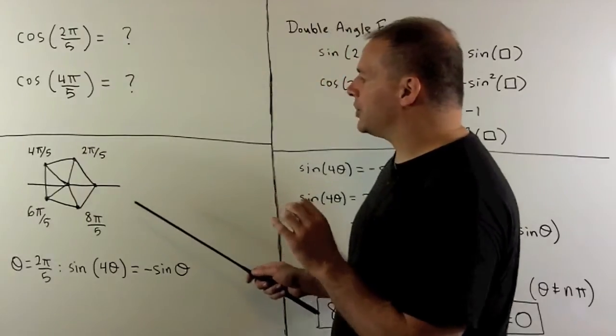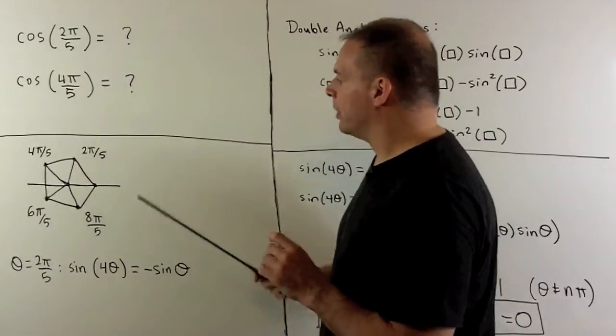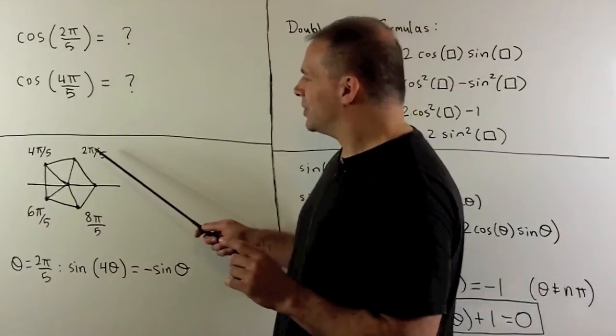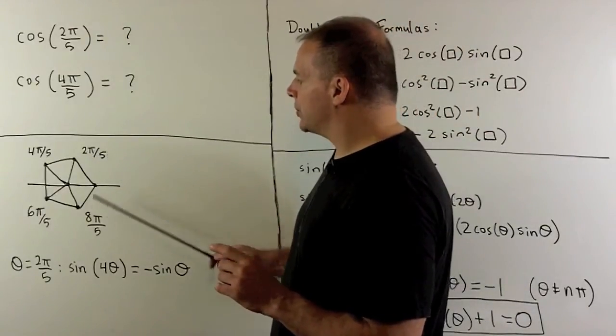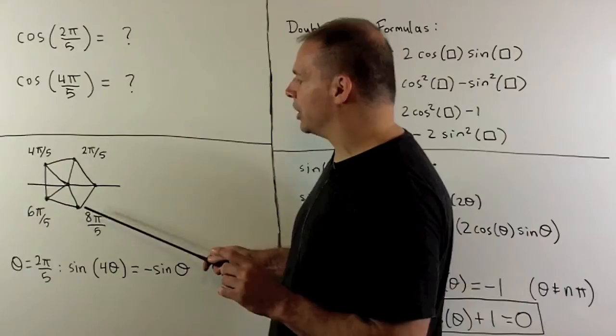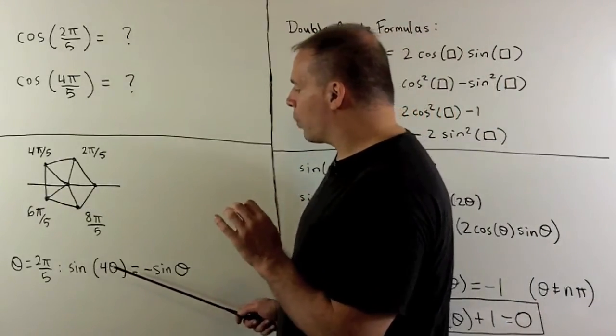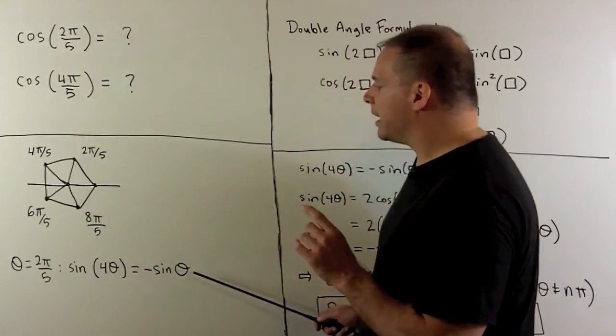If we're looking for relations among these angles, between the cosines and sines, we note, since 2π/5 goes to 8π/5 under a reflection through the x-axis, we're going to have the relation that sine of 4θ equals minus sine of θ, with θ equal to 2π/5.